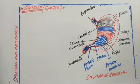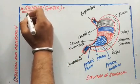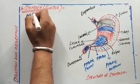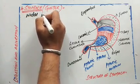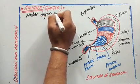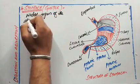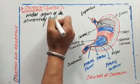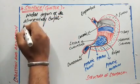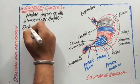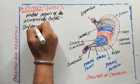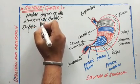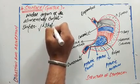Today we deal with the fourth component of the alimentary canal, that is the stomach. The stomach is also called as gastro. It is the widest part of the alimentary canal. If we look at the shape, it is J-shaped.